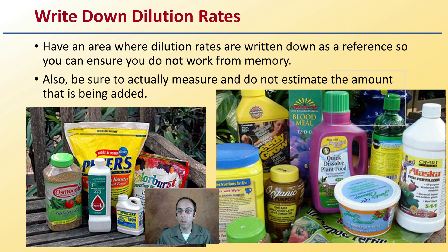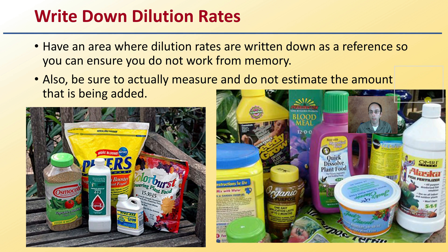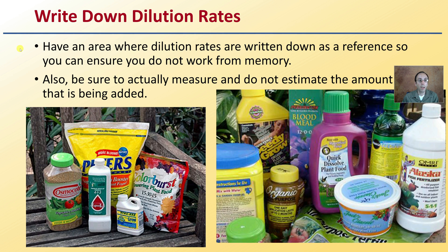You also want to be writing down your dilution rates. As growers, we typically use a lot of different products — nothing wrong with that — but have an area where dilution rates are written down as a reference, so you can ensure you do not work from memory. Also, be sure to actually measure the amount that's being added. You can write it right on the bottle, have a set chart, have a set paper you always go to, so you're not just going off of memory.